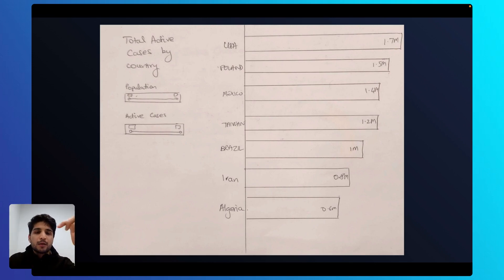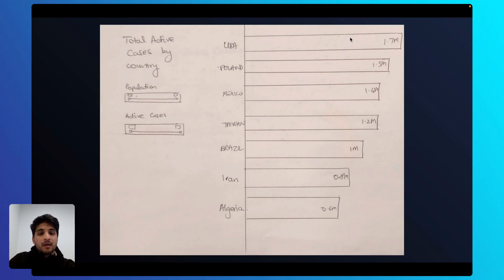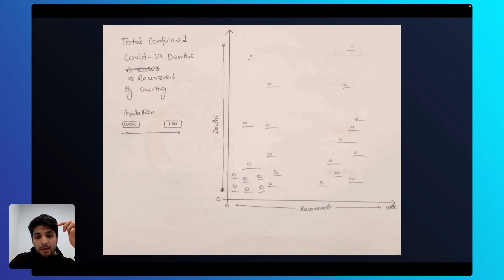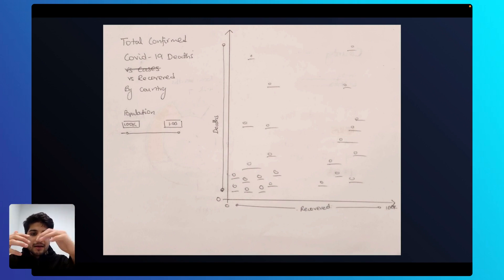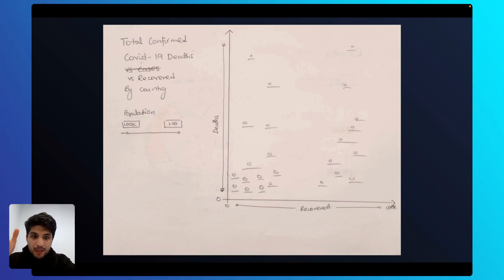For Emma's first question on total active cases by country, you realize she wants to compare the active cases for each country against each other. Whenever you're comparing values for categories or countries, a bar chart is a super appropriate chart to use, because you can easily compare the length of each bar against the other. For the second question — total confirmed COVID-19 deaths versus recovered by country — the most appropriate chart is a scatterplot, because total deaths and total recoveries are both numeric values. When you want to explore the relationship between two numeric values across multiple categories, a scatter chart is most appropriate.